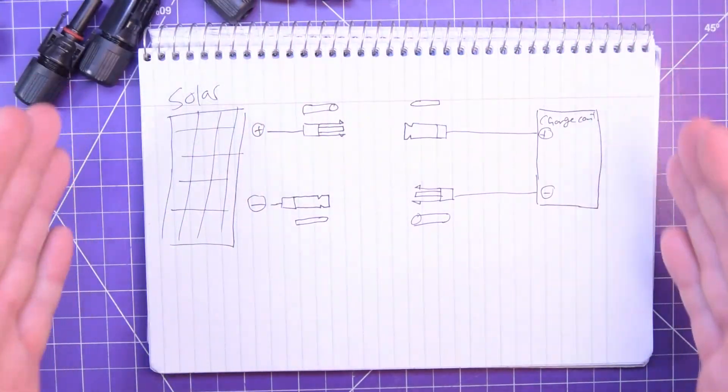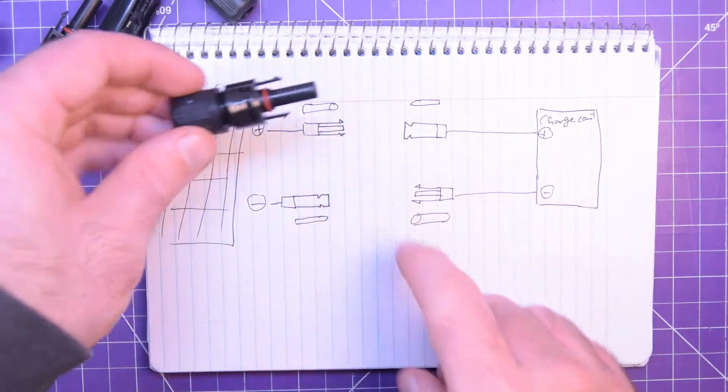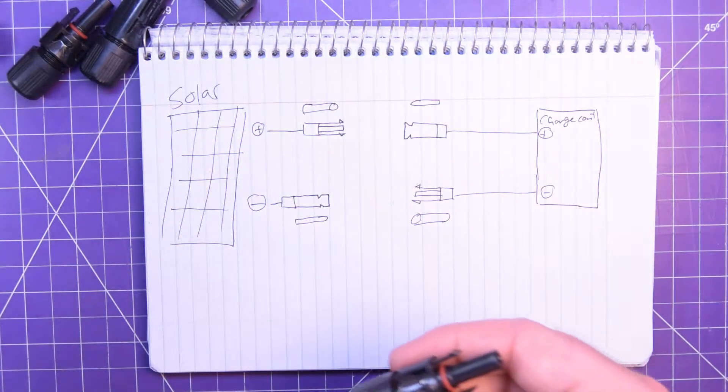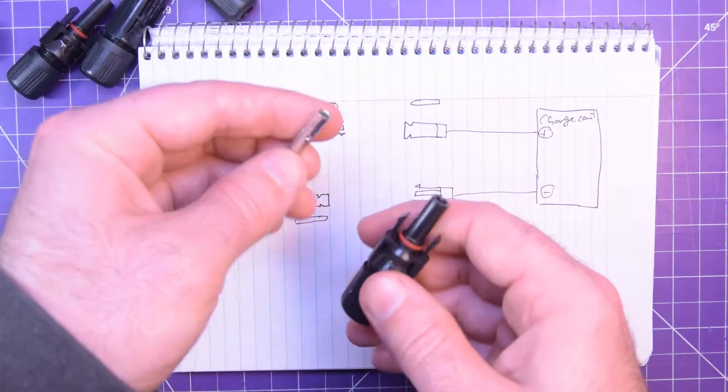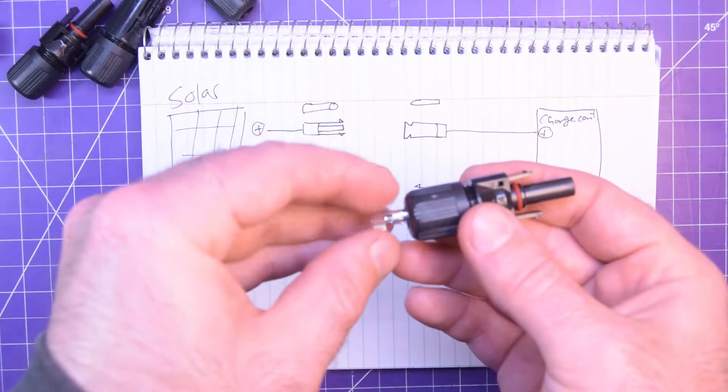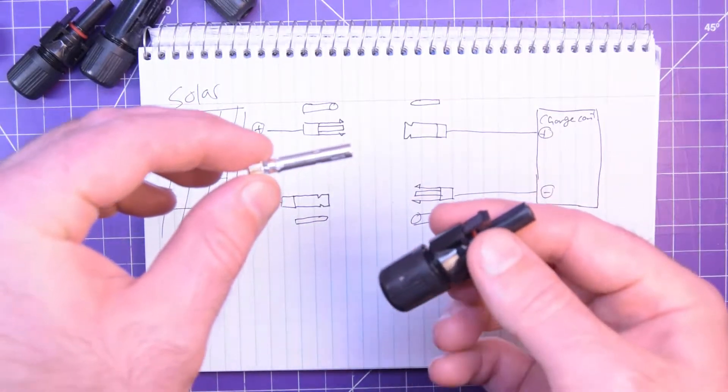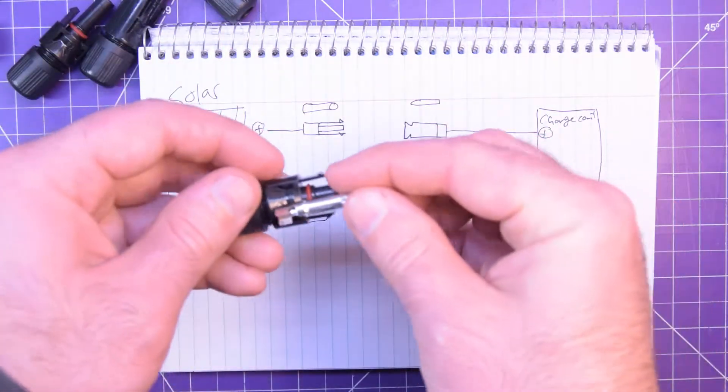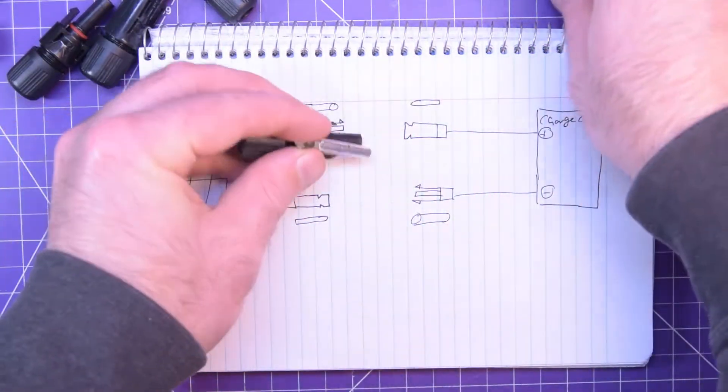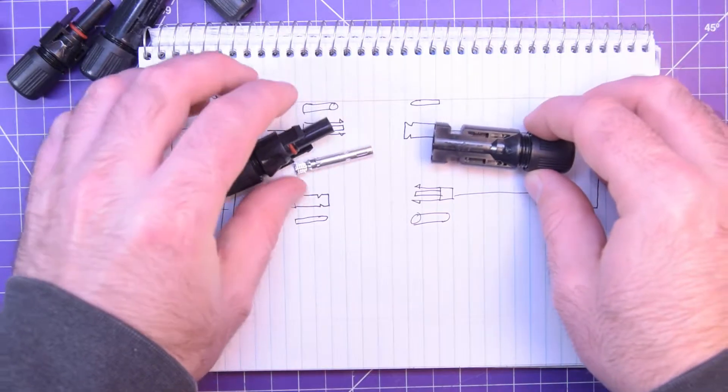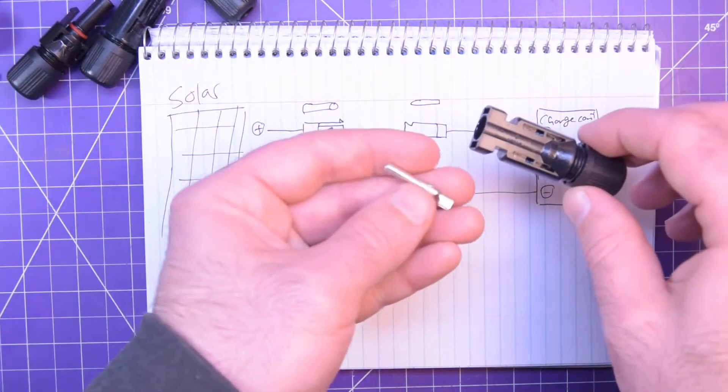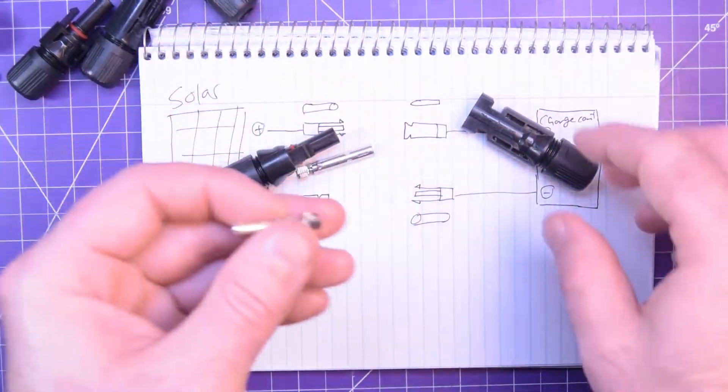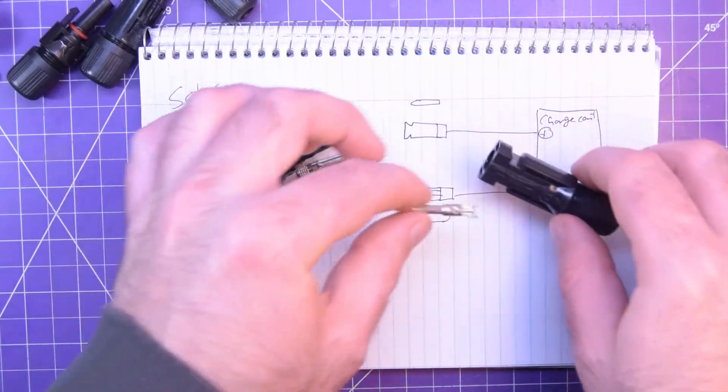So I made a small diagram here to help you guys out. You've got this symbol here, which is the MC4 male. It actually accepts the female terminal on the inside that just slides in from the backside after your crimp. And so you actually have to make sure that the female end goes inside the male end, which will mate with the female MC4, which actually uses the male pin. It's not quite male because there's a hole in it, but you know what I mean.